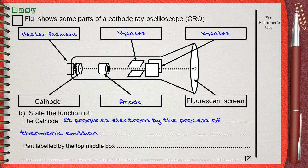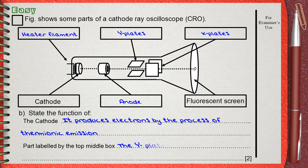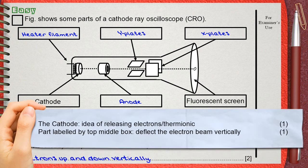The part labeled by the top middle box is the Y plates. In a previous question, we said the Y plates are connected to the Y input. This makes the Y plates able to deflect the beam of electrons upward and downward. So, the Y plates deflect the beam of electrons vertically on the screen.